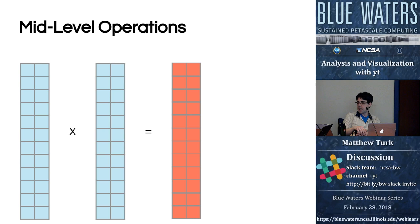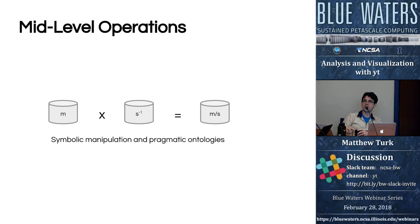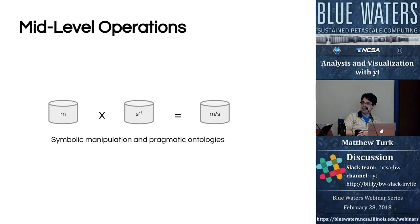On top of this are the mid-level operations. We can think about things like multiplying two arrays together — for instance an array that is a distance and an array that is a frequency, to get distance per second. YT does this by tracking symbolic units across simulations. If it knows that a density is stored as grams per meter cubed, that becomes a SymPy object affiliated with that array and operated on as it's carried along.